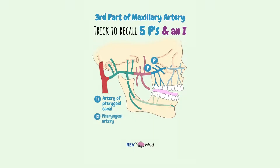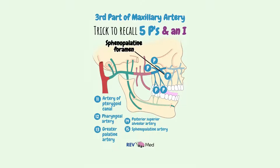The pharyngeal artery supplies the pharynx. The greater palatine artery descends to the hard and soft palate. The posterior superior alveolar artery supplies the maxilla. The sphenopalatine artery supplies the nasal cavity. And finally, I is for the infraorbital artery, which enters the inferior orbital fissure.